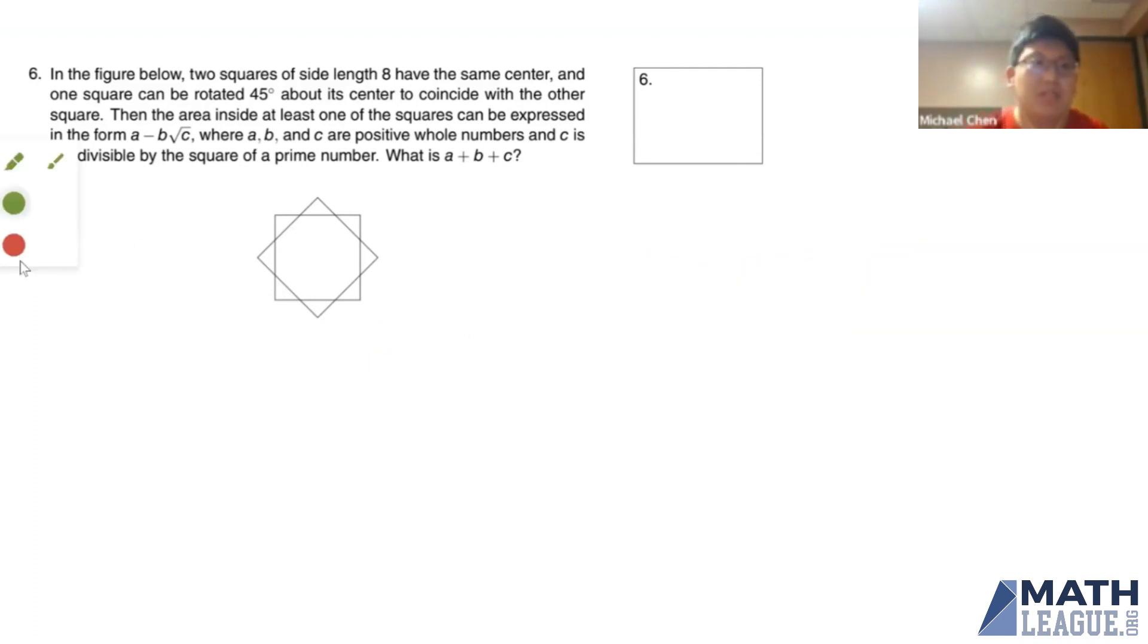Now the first thing to note is that when we have two congruent squares in this formation, one square is rotated 45 degrees and the two squares share the same center, then this by definition creates a regular octagon. So this right here on the inside is a regular octagon, like a stop sign.